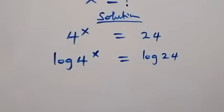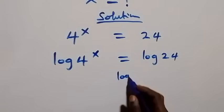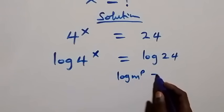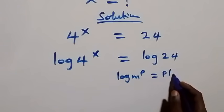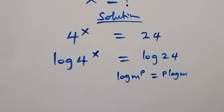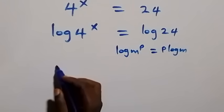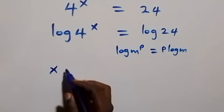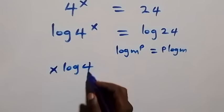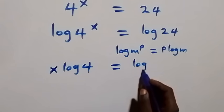Applying the power law of logarithms, which states that log of m raised to power p is the same as p times log m, what we have here becomes x times log 4 equals log 24.